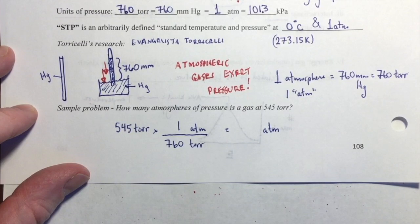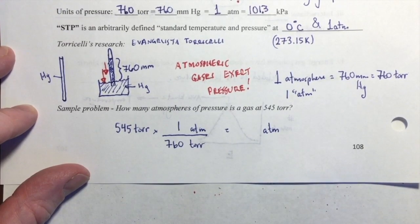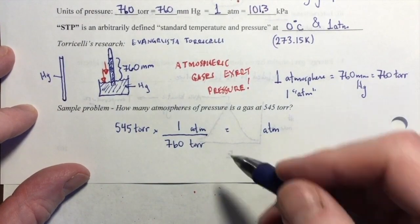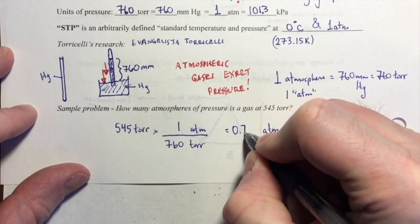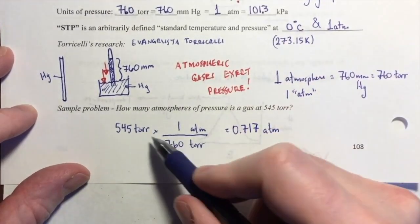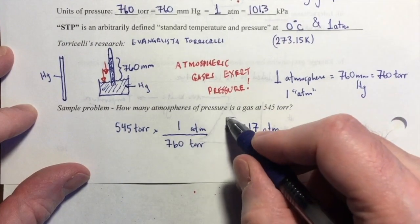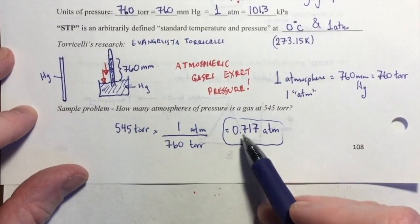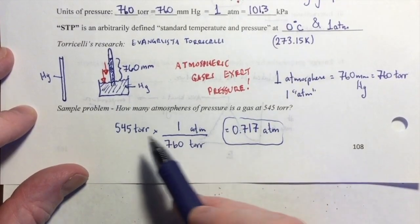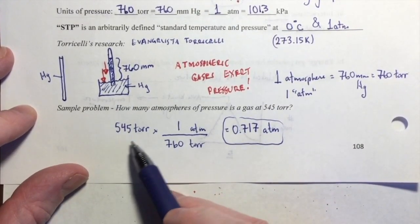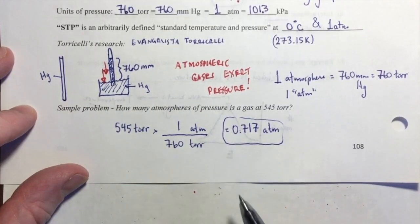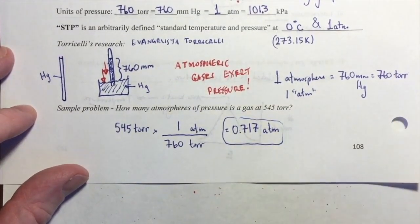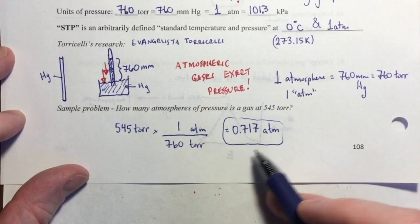If I get my calculator, 545 divided by 760 equals 0.717, three sig figs because of that number not because of this one. And there's my answer. Does the answer make sense? Yes, it's less than one atmosphere and that is less than 760 Torr, so it appears to be about right. And that's how we do just a simple gas pressure conversion.